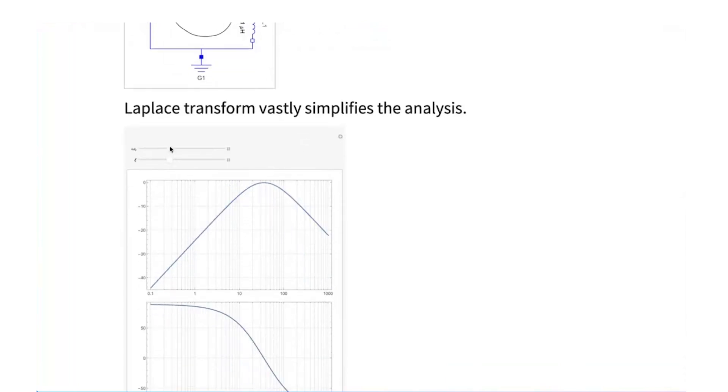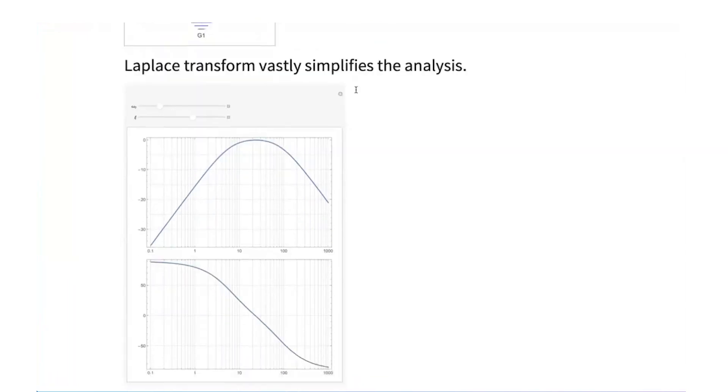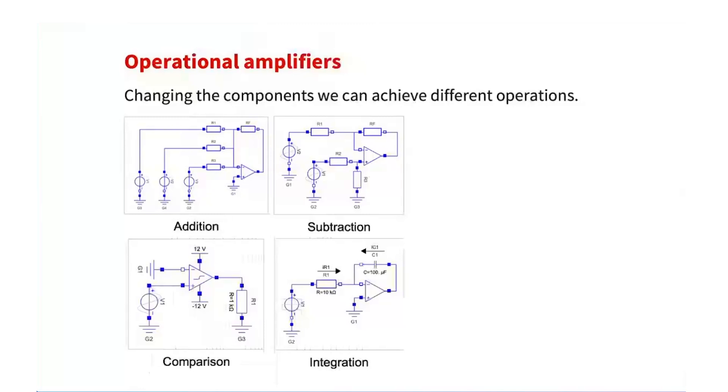And we can see, for example, how it will behave for different parameters. And based on this, we can decide what's going to be the values of each of the components. And as mentioned before, the fourth part is operational amplifiers.